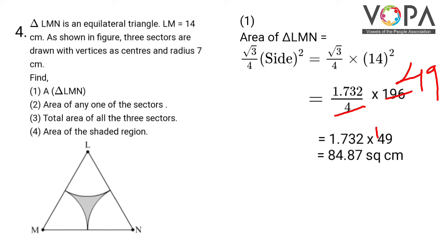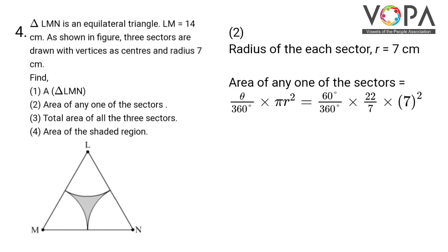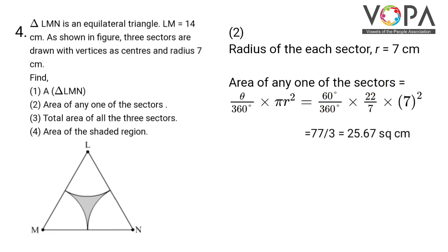We have to find the area of any one of the sectors. The radius of each sector is 7 cm, and all three sectors are equal. Area equals theta/360 into πr², that is 60/360 into 22/7 into 7 squared. Cancelling and simplifying, we get 77 divided by 3, which gives 25.67 square cm.